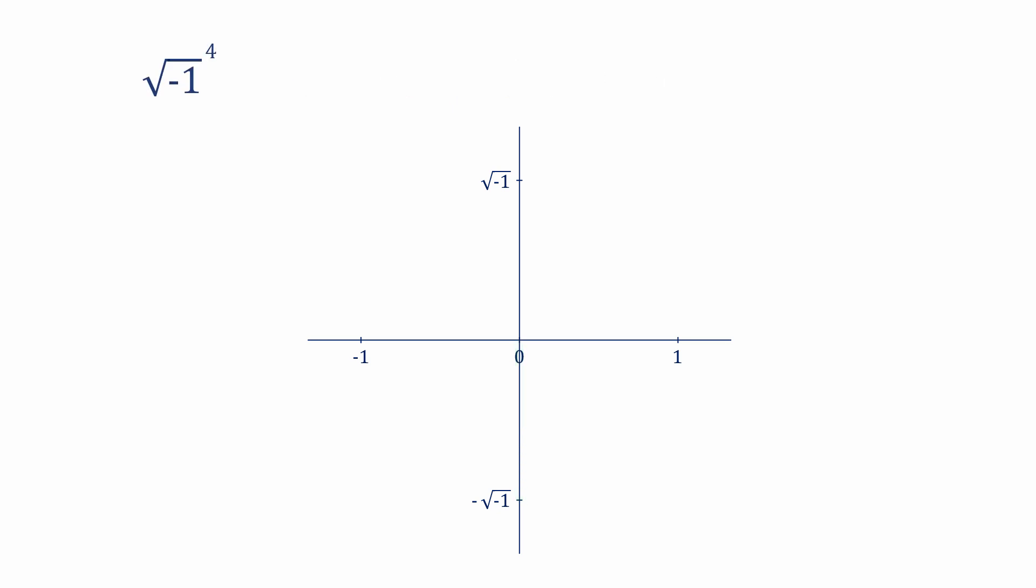When the square root of minus one is raised to the power of four, we get positive one. It's not quite so obvious why. But remember, we've already established that the square root of minus one squared is minus one. And now we've done that twice. So we have minus one times minus one, which we know is positive one. This result can be represented with a 270 degree rotation.